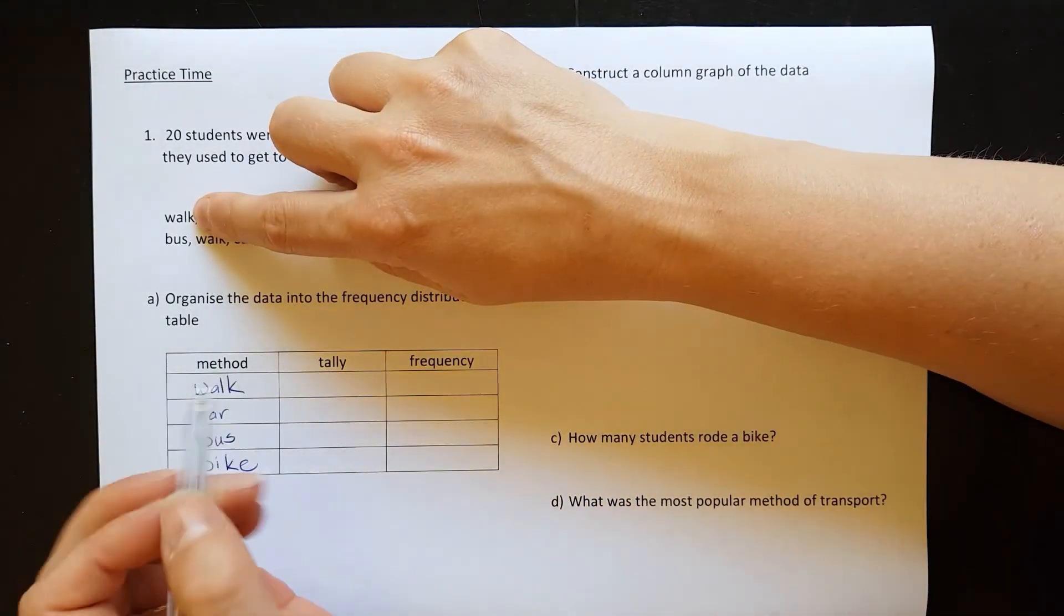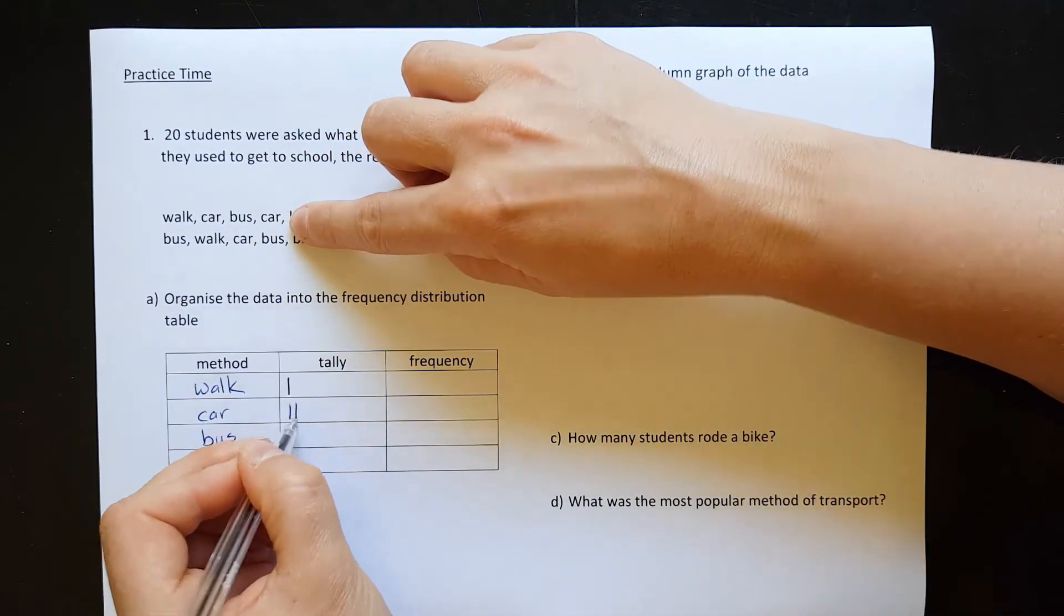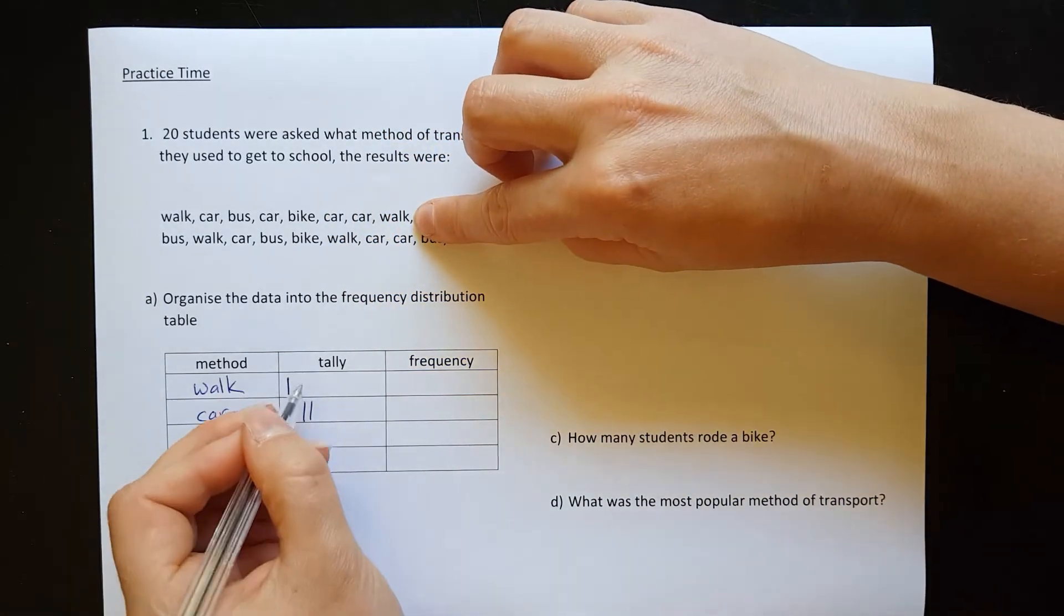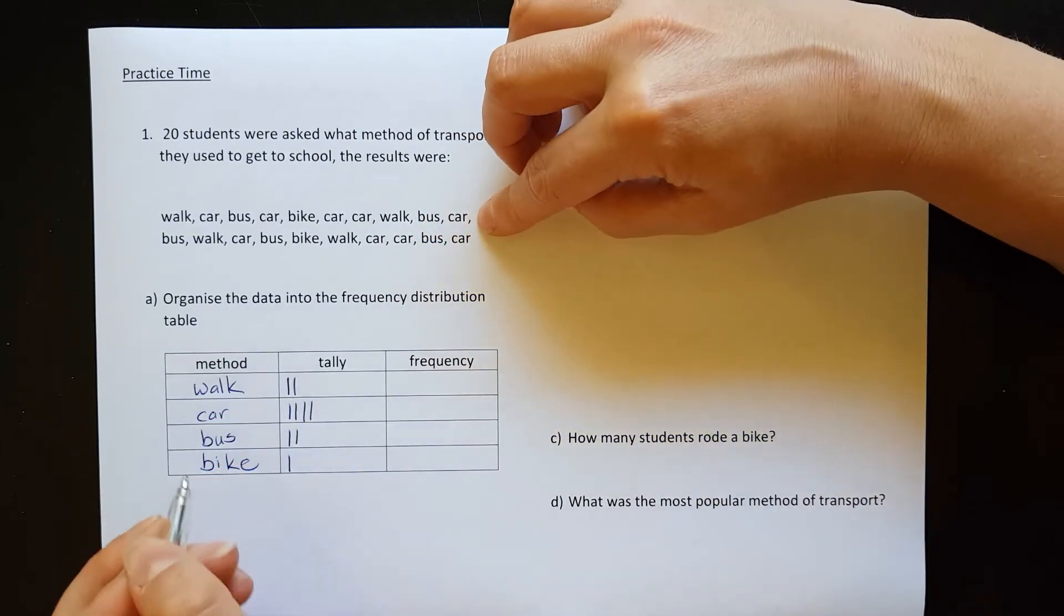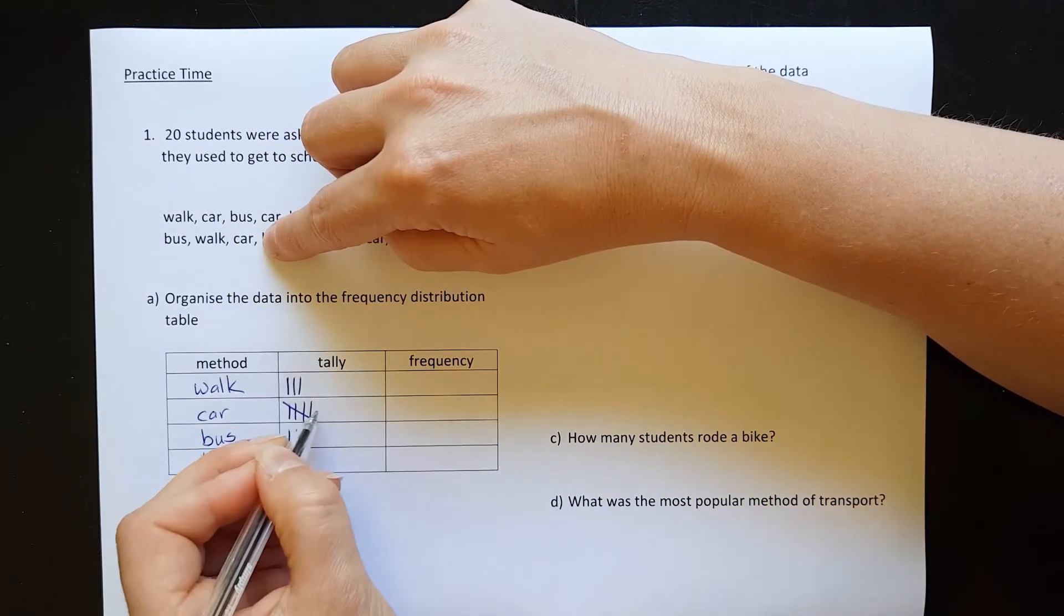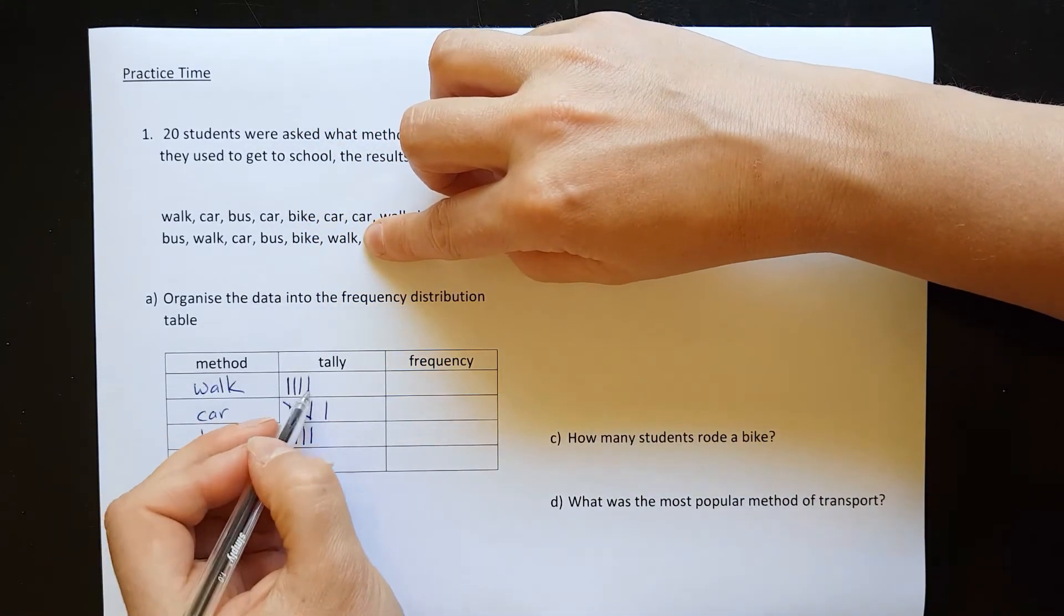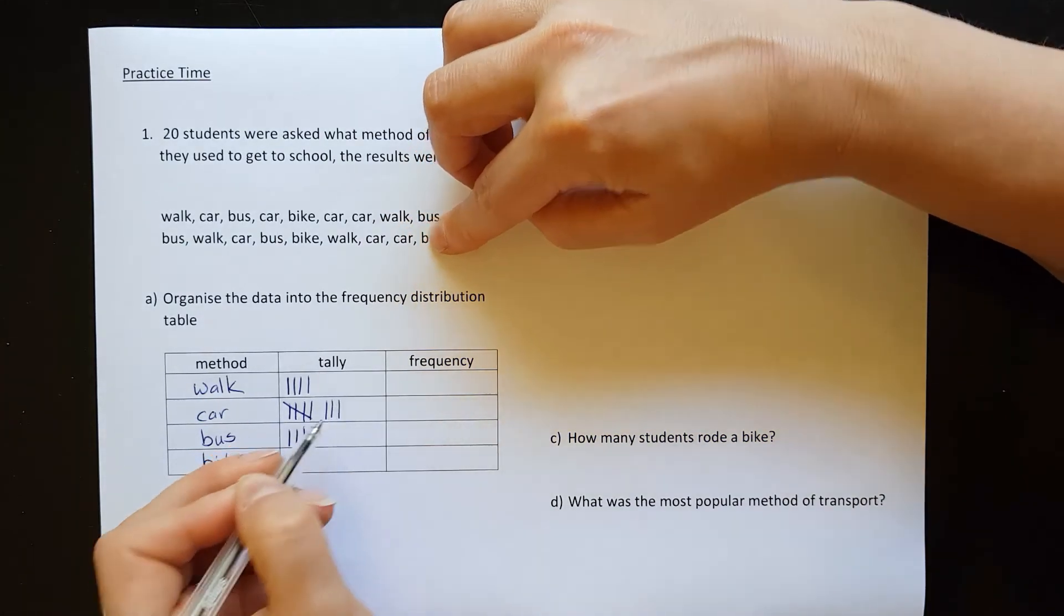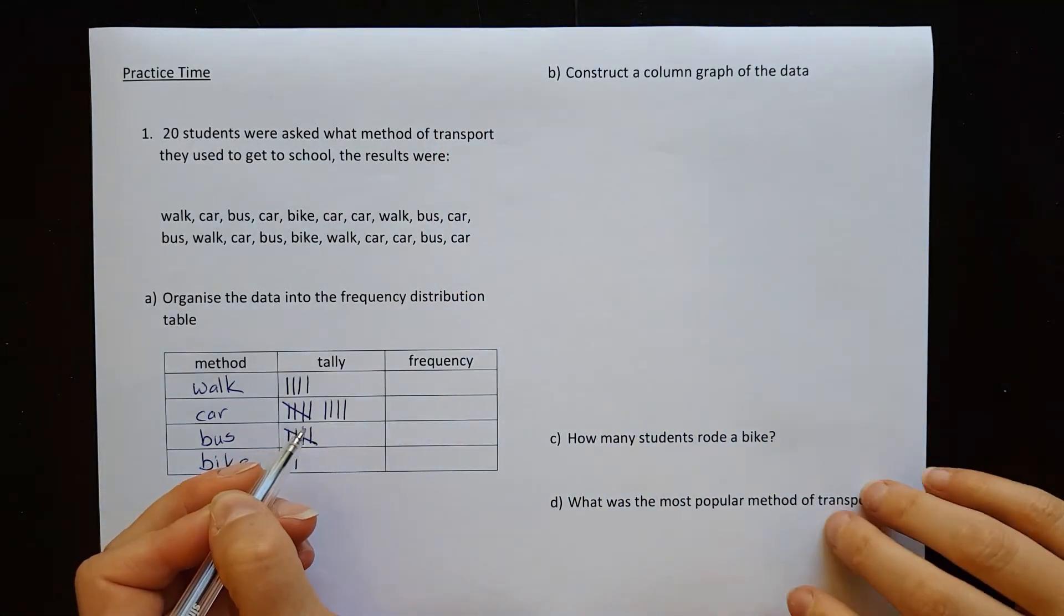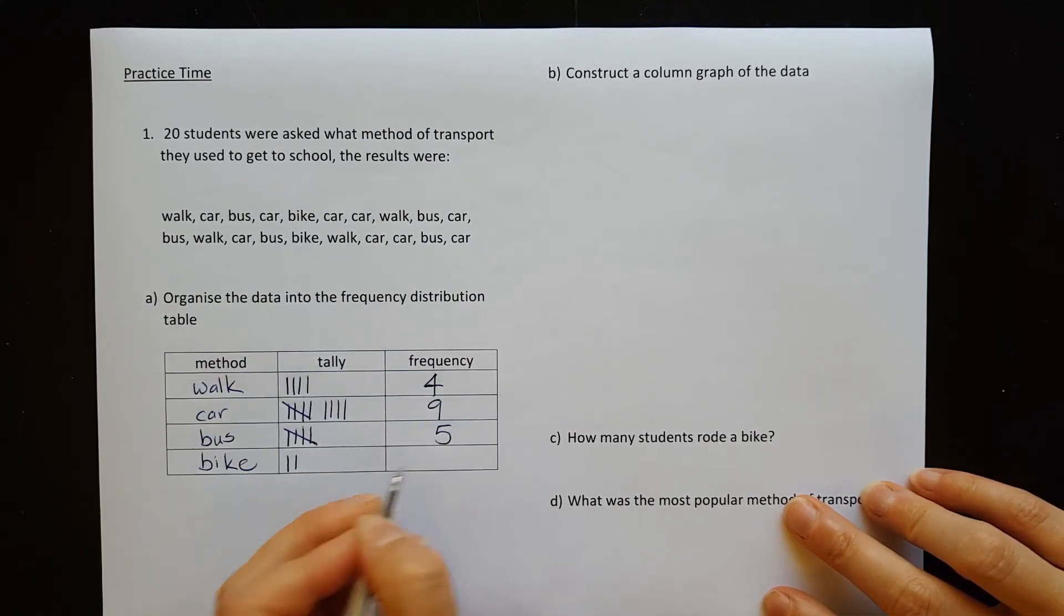Let's fill in the tally. Walk is first, car, bus, car, bike. Car, car, car, walk, bus, car, bus, walk, car, bus, bike, walk, car, car, bus, car. So let's fill in the frequency part. We have four, then nine, five, and two.